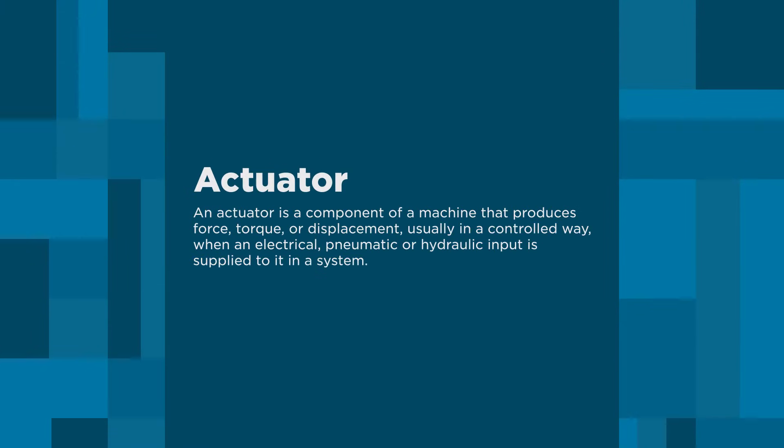But that brings up a good question: what is an actuator? Simply put, an actuator is a device that produces motion from energy. DC motors, servos, steppers, solenoids — these are all examples of actuators as they convert electrical energy into movement.